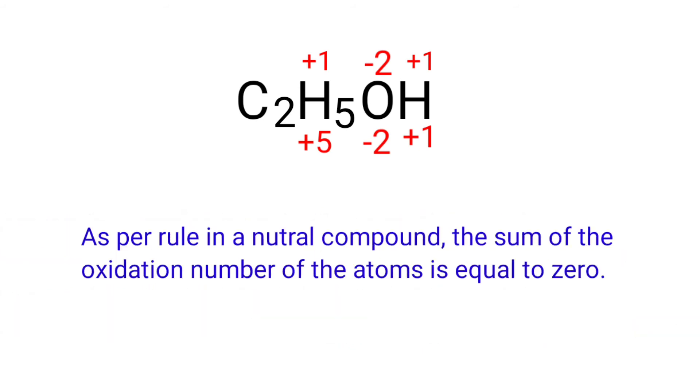As per rule in a neutral compound, the sum of the oxidation number of the atoms is equal to zero. So the numbers along the bottom must add up to zero. So the number under C2 must be minus four.